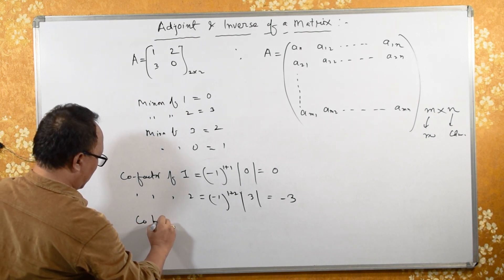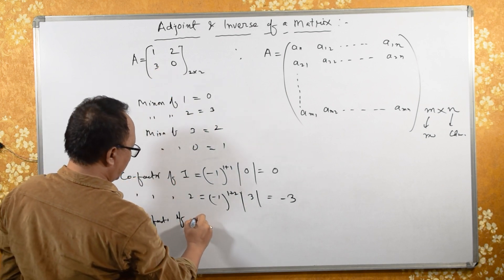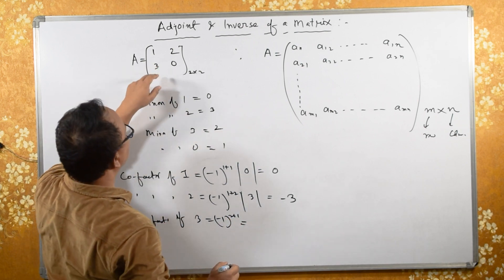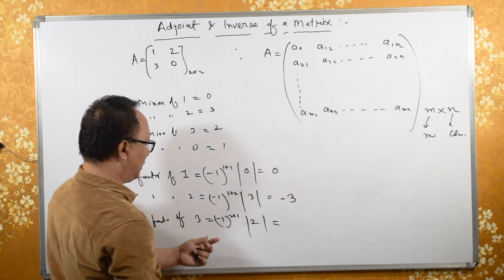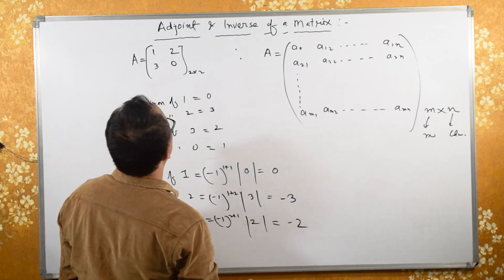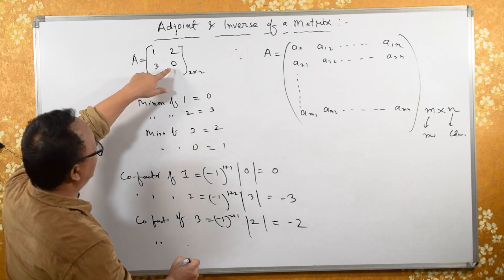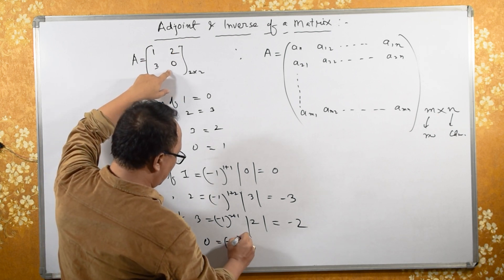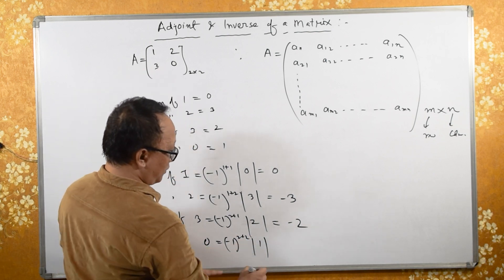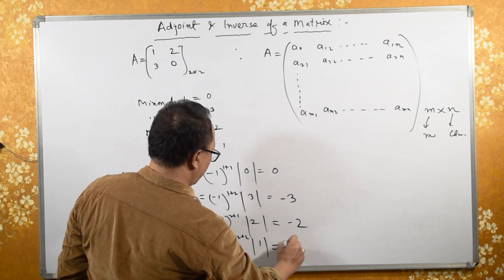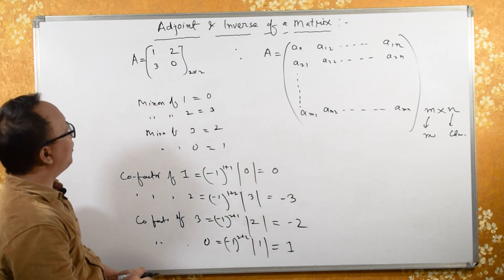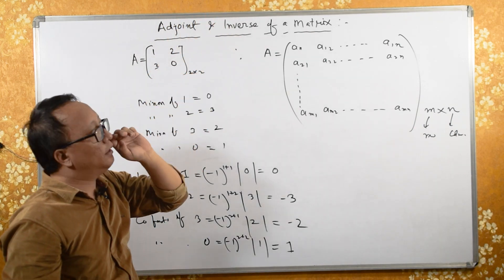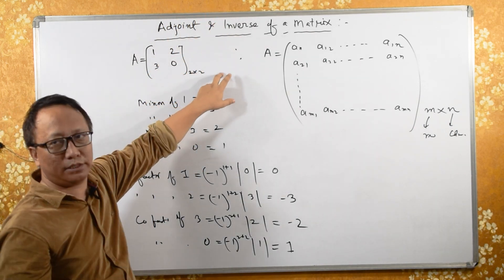The cofactor of element 3, at second row, first column, is (-1)^(2+1) times 2, giving minus 2. The cofactor of element 0, at second row, second column, is (-1)^(2+2) times 1. Since 2+2=4 is even, the result is plus 1. So starting from the top-left, the sign pattern goes: plus, minus, minus, plus — alternating in this way.